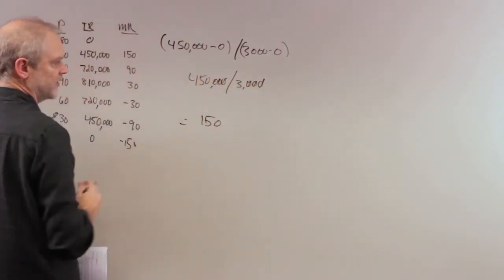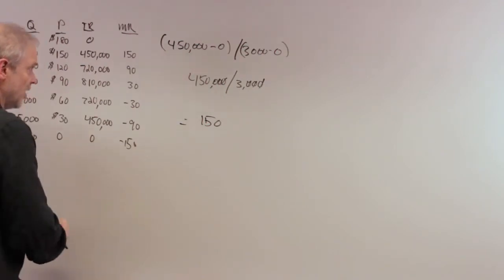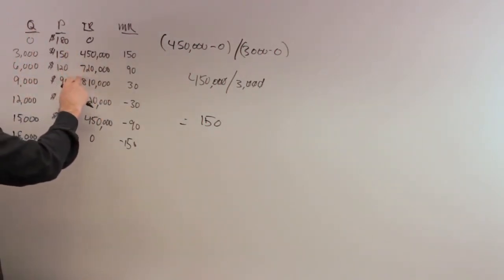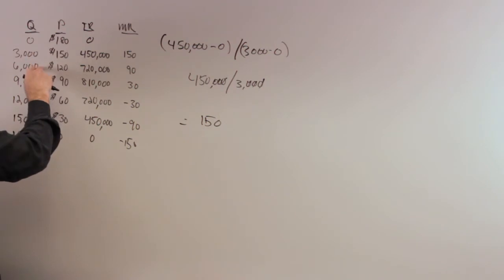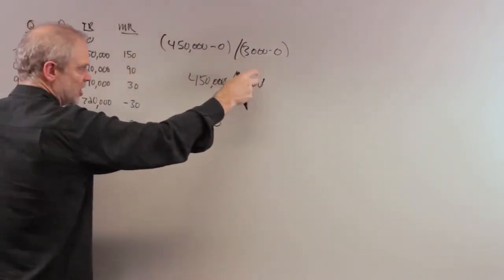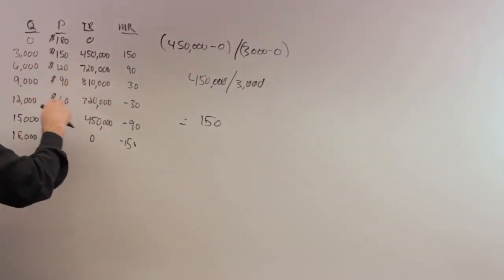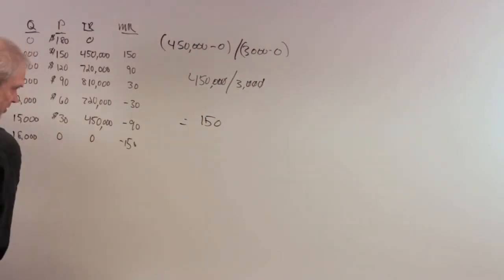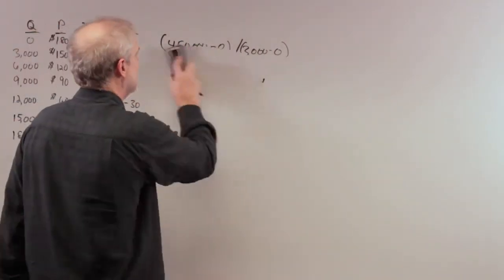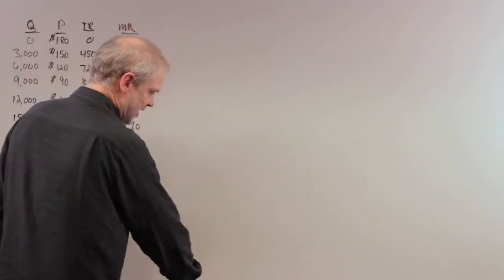To get the marginal revenue from 3,000 to 6,000, the change in Q would again be 3,000. The change in revenue would be 270,000 divided by 3, giving us marginal revenue of 90. That's how you compute marginal revenue. Now for the first question: if there's only one digital cable TV company in this market, what price would it charge?